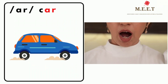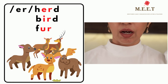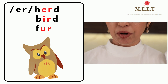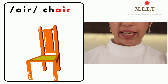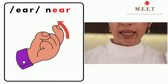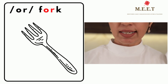Lastly, let's look at the R-controlled vowels. 'ar' as in the end of the word car. 'er' as in the middle sound in herd and bird, and the end of the word fur. 'air' as in the final sound in chair. 'ear' as in the final sound in near. 'or' as in the middle sound in fork.